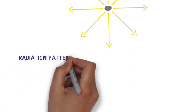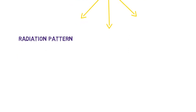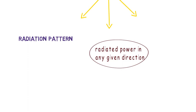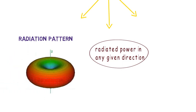Now what is radiation pattern? Radiation pattern defines the variation of the power radiated by an antenna as a function of distance away from the antenna.